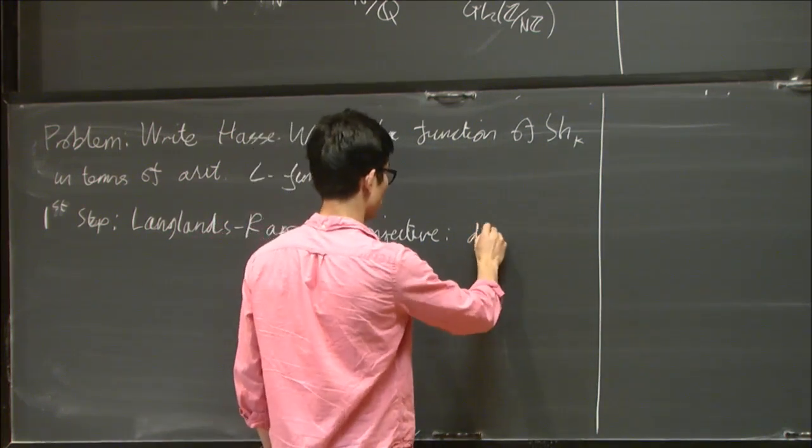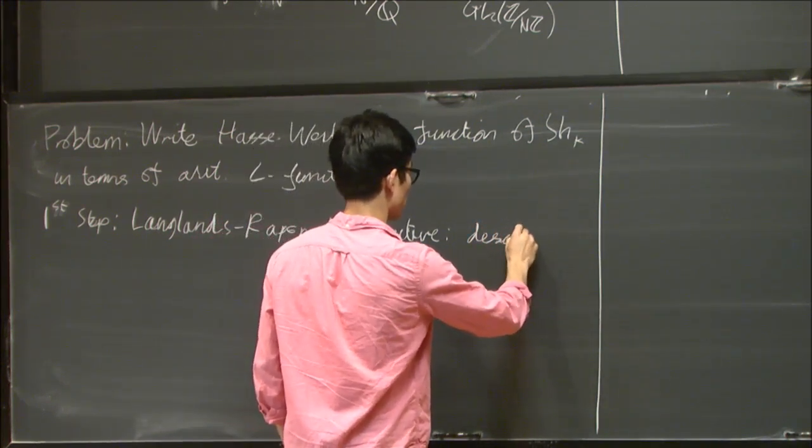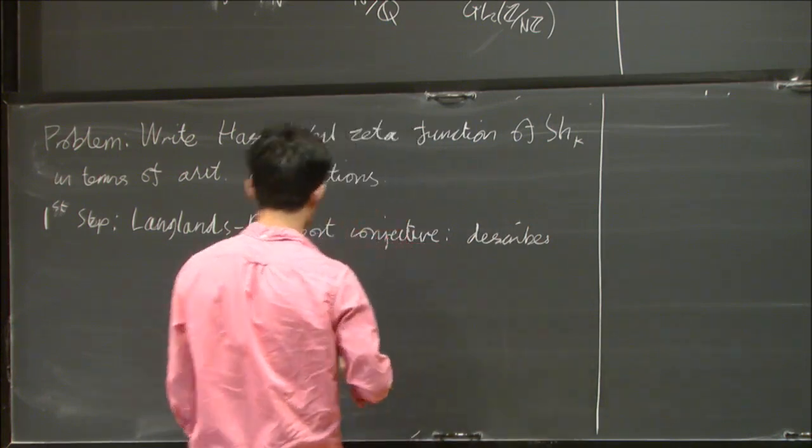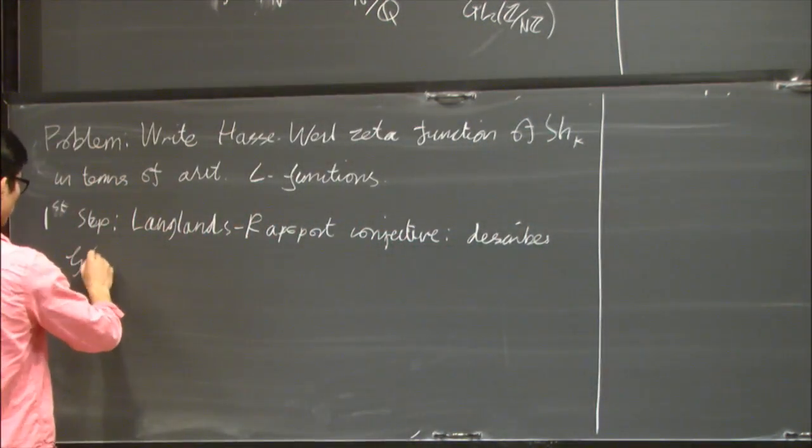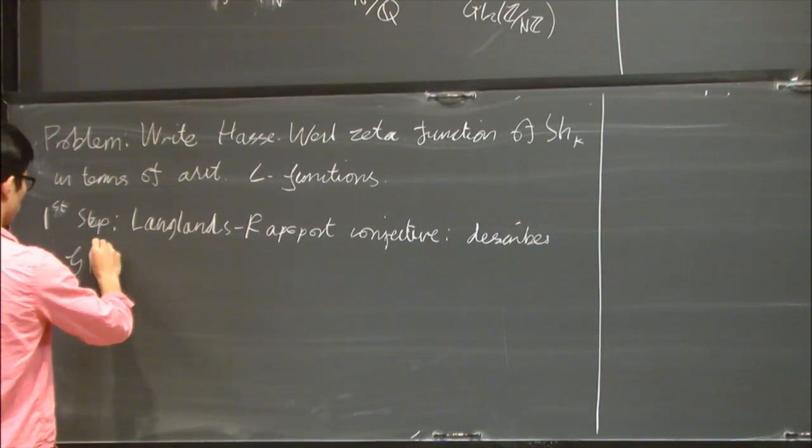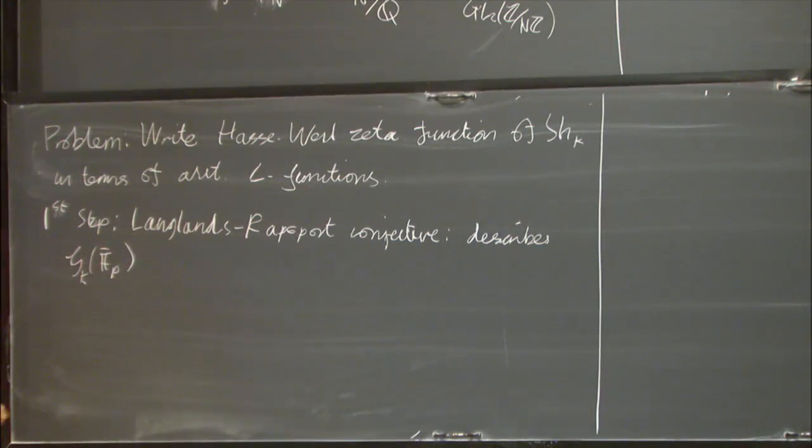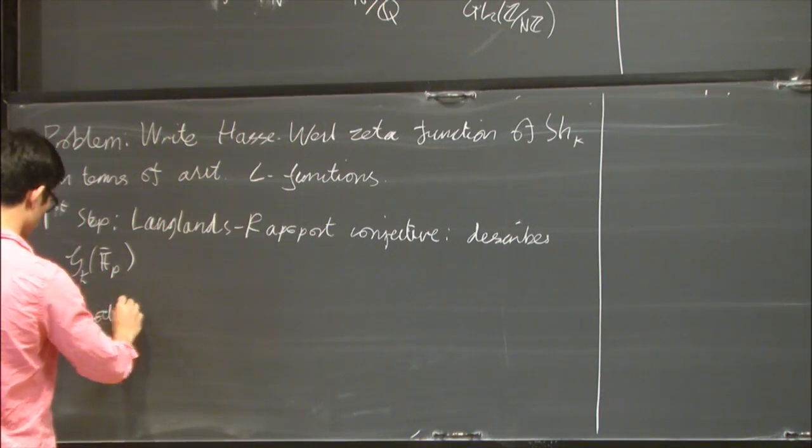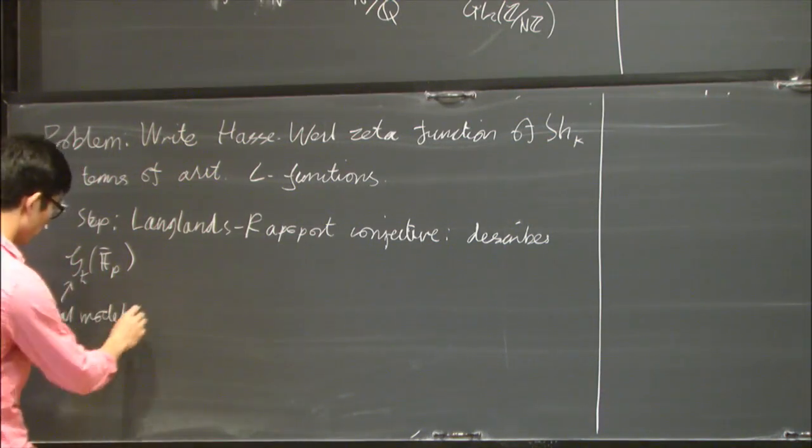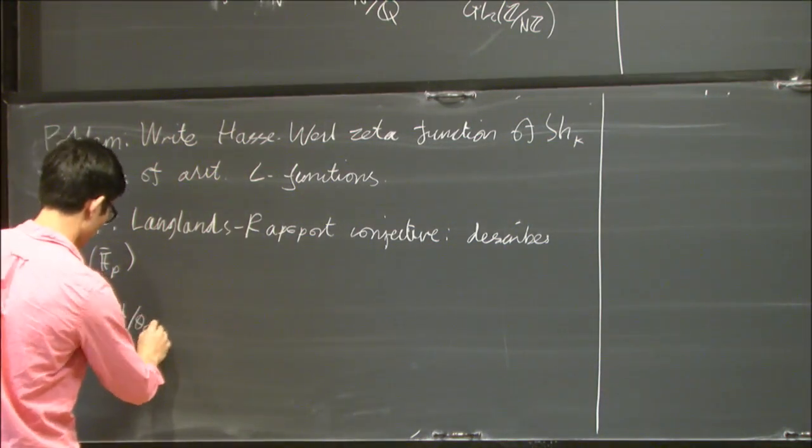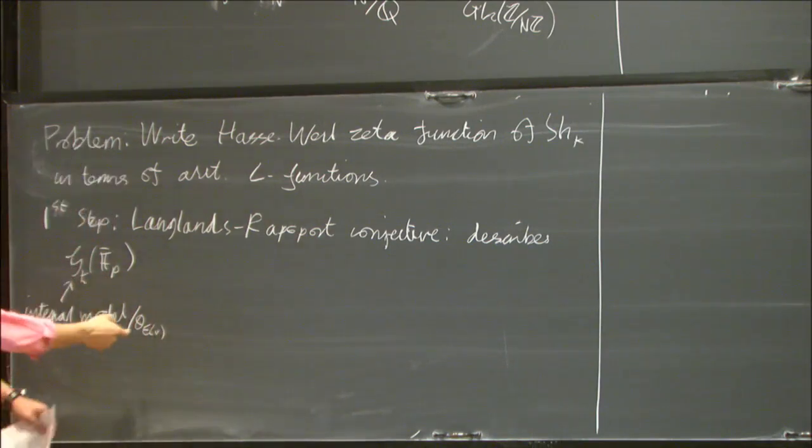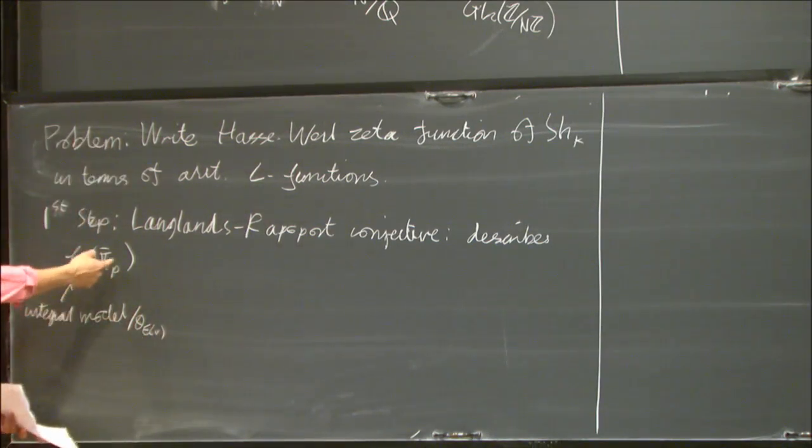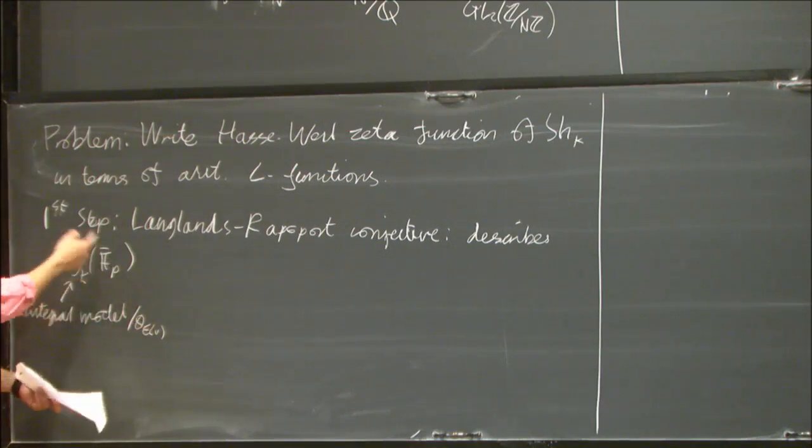This conjecture describes the F_p-bar points of a certain integral model for the Shimura variety. This script S_K is going to be an integral model for the Shimura variety. So this is some object which lives over the ring of integers of E localized to a certain prime v, which divides p.